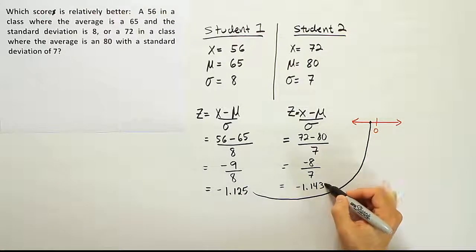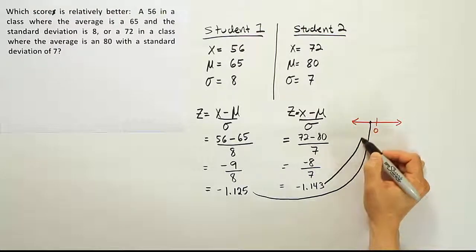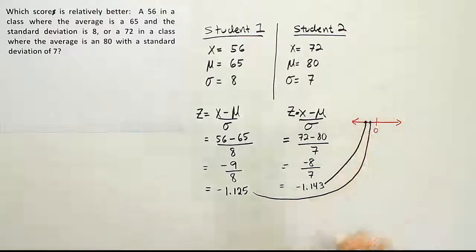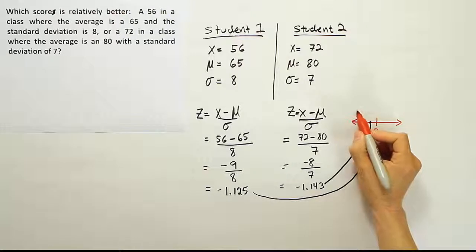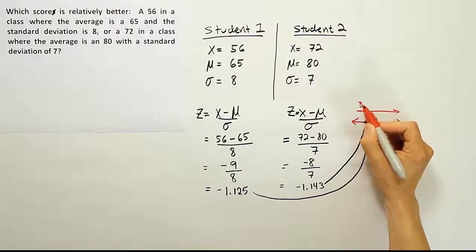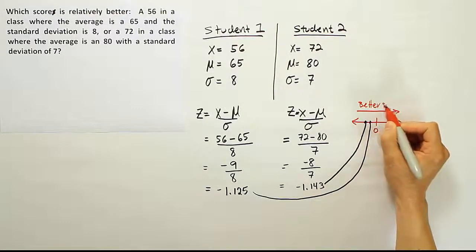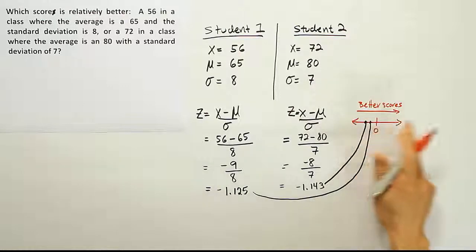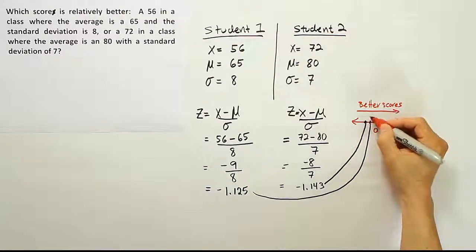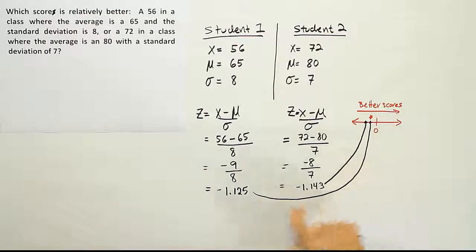And this value, negative 1.14, is just a little bit further to the left. And what that means is that since the better scores go to the right, so the higher scores are to the right-hand side of the curve, this score here is the winner. It's the higher score.